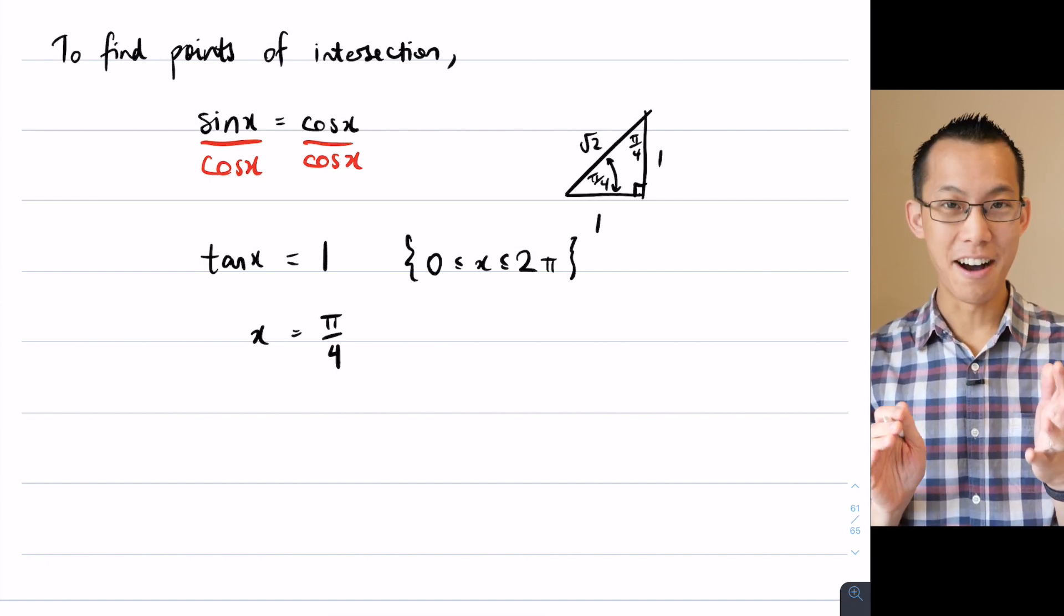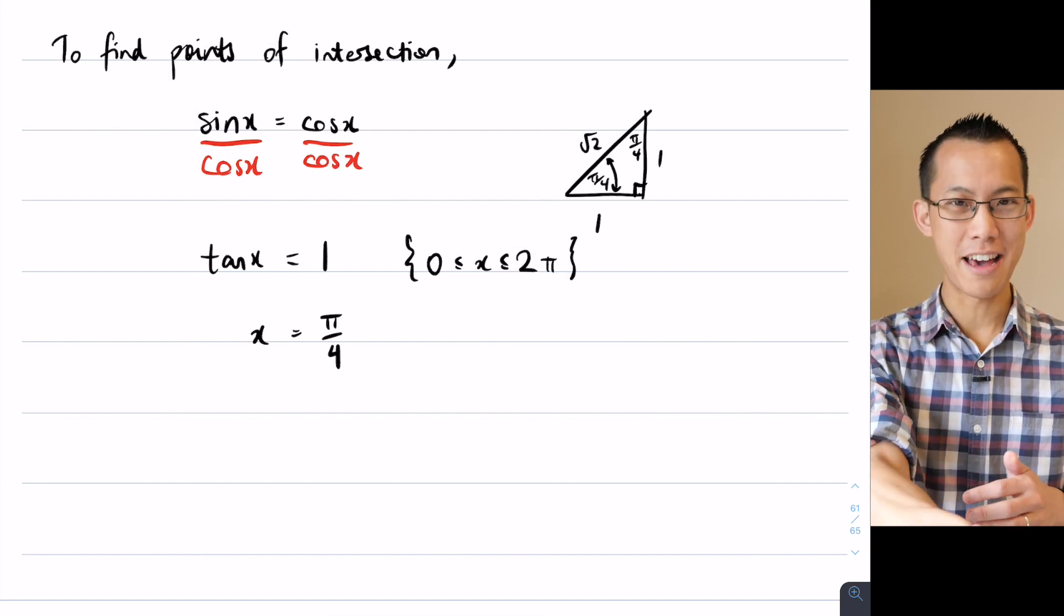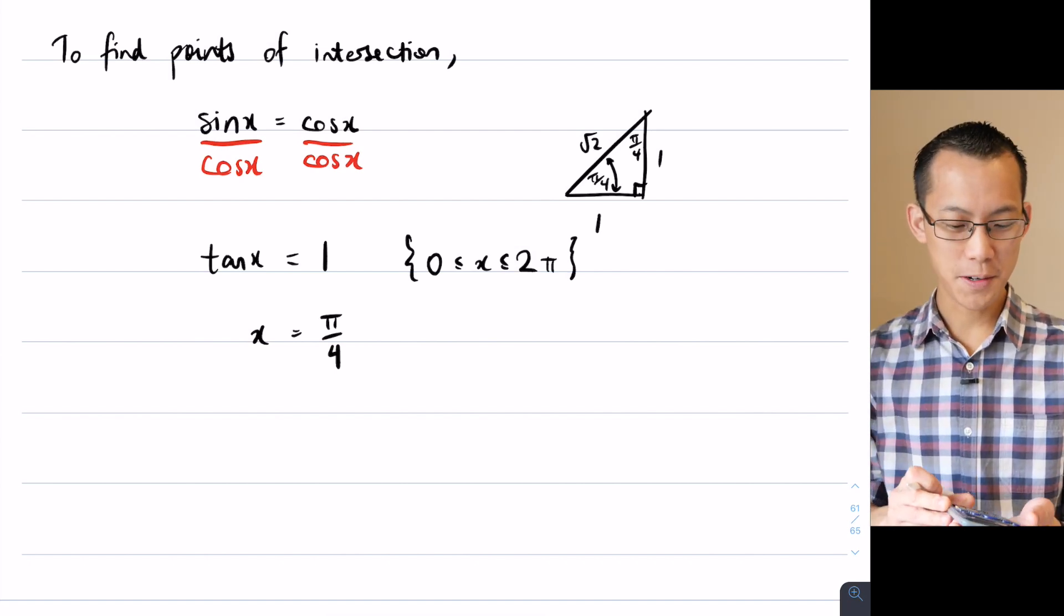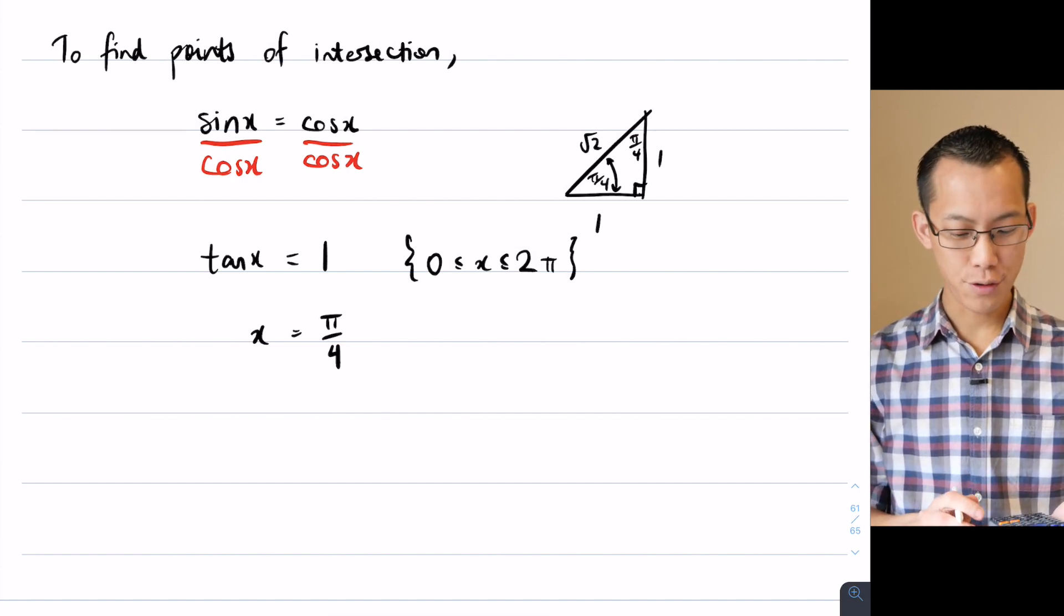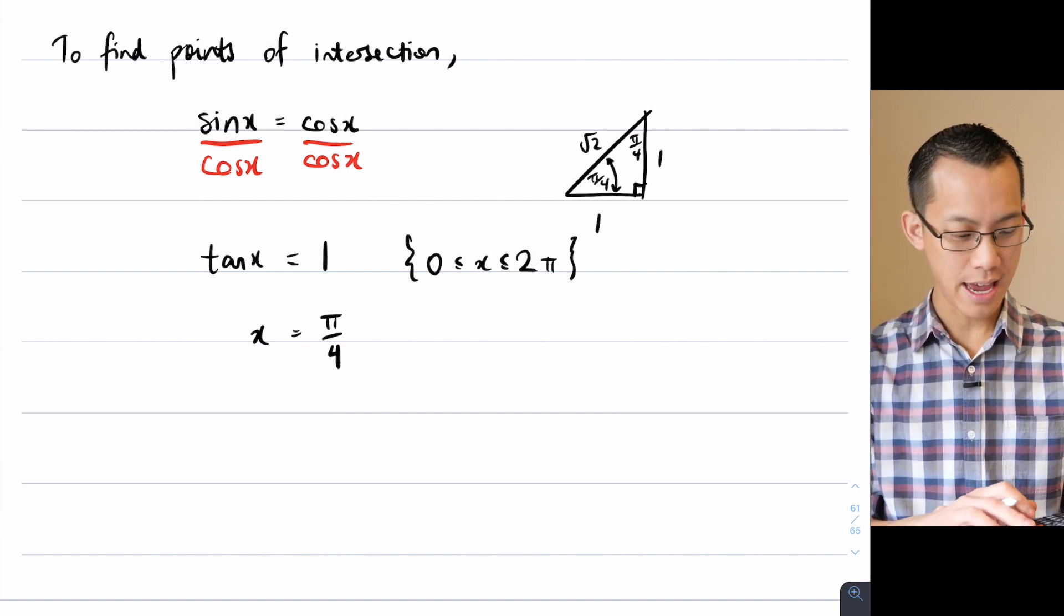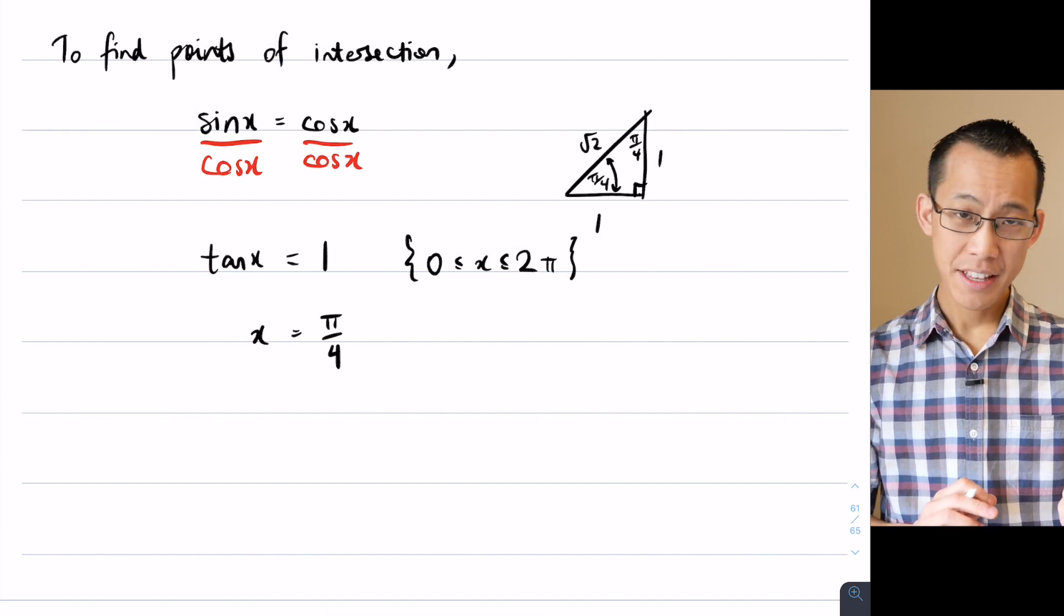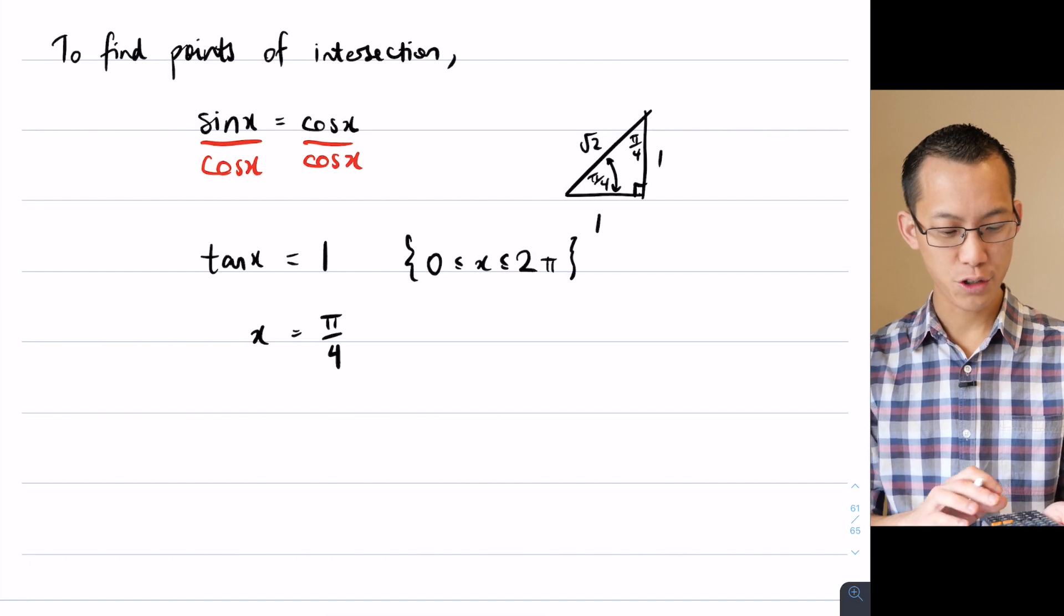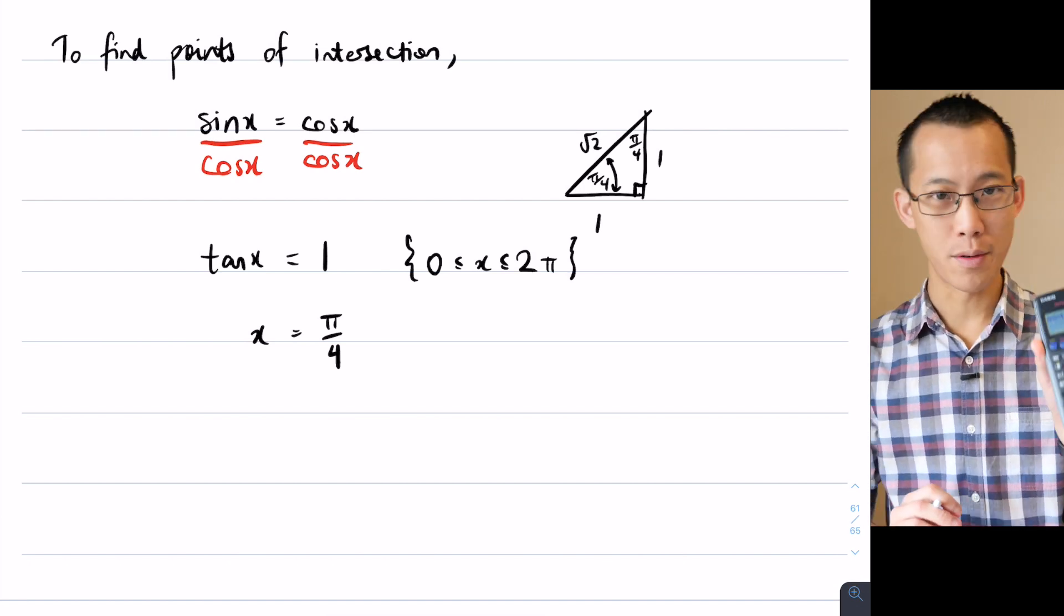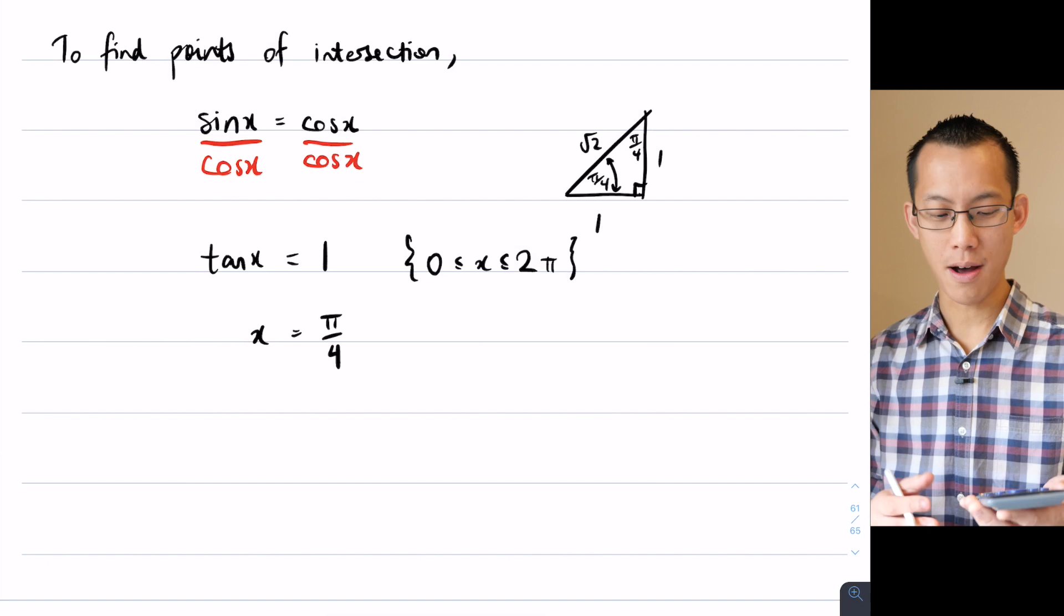If you're like, okay I was in a hurry and I didn't remember how to do that, reach for your calculator. What you want to do, making sure that you are in radians, is if you go shift tan of 1, it's going to hand you back a weird looking decimal.